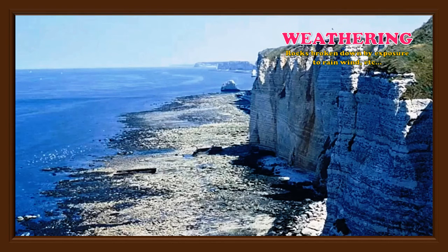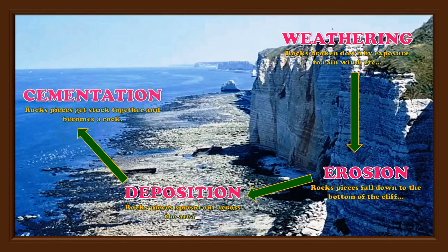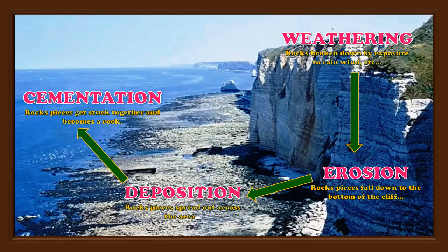To summarize the exogenic processes: first, weathering breaks down rocks due to exposure to rain, wind, and water. Erosion causes rock pieces to fall down, and these are spread by transportation and deposition. In mass wasting, large masses of rocks from hillsides or mountainsides are broken and fall as fragments or sediments. Eventually, these pieces get stuck together and become rock through sedimentation by a process called cementation. On a large scale, when large masses of rock sediments become thick, they can form a new layer of ground. The end product of the exogenic processes is sedimentary rock.